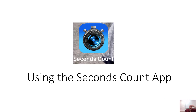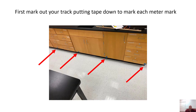Here we have the Seconds Count app, which is very useful in physics when we're trying to record time for hitting a certain point. We did a projectile car in my class. Before we start using the Seconds Count app, you want to mark off a field because you're going to need points where you can see in the video that the car — or whatever object you're using — got to. The app is going to tell you what time it was when it got to that point.